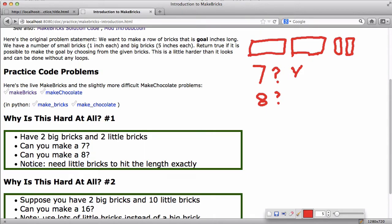But it turns out you can't. You could have the one five and the two little ones. You don't have the right number of little ones to make it come out to eight exactly. And so this just points out this first problem which is, you need the right number of small bricks to make the length come out exactly, even if the overall length you could make is a little bit more.